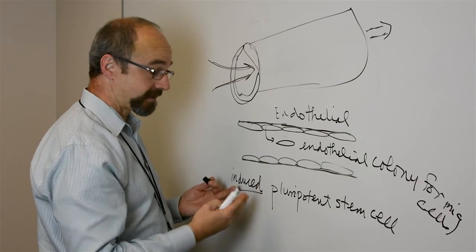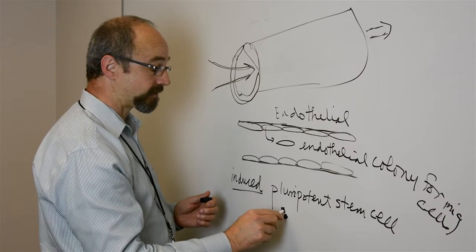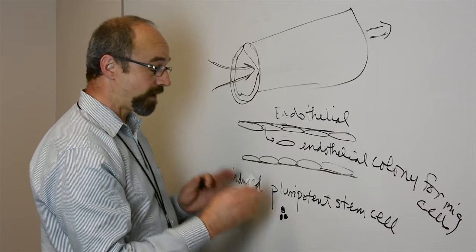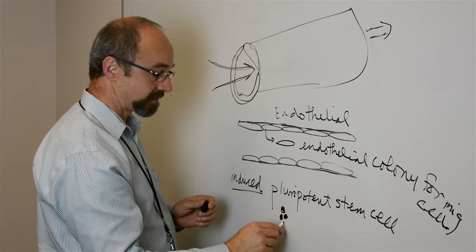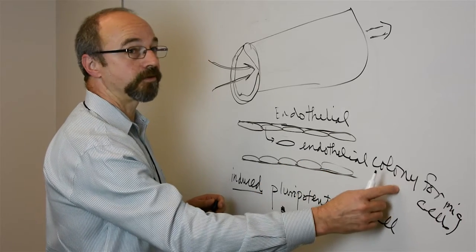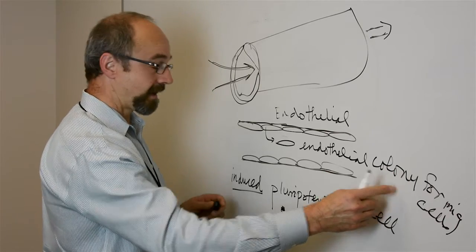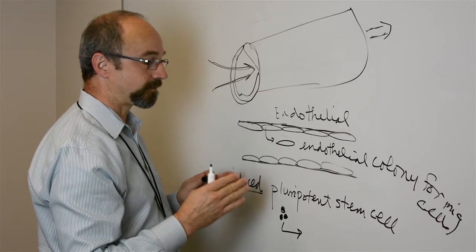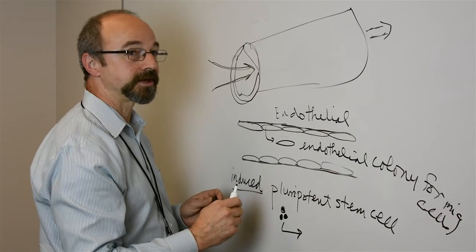We're now able to make these cells, but once we make these little stem cells that can divide forever, we have to figure out how we can get these stem cells to turn into the endothelial colony forming cell type. That was the project that this paper discusses in great detail.